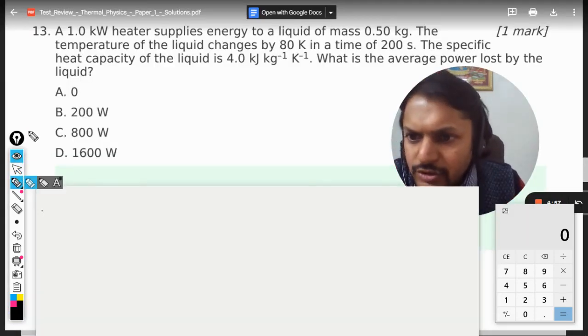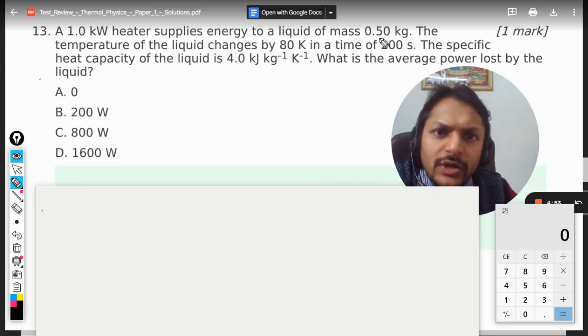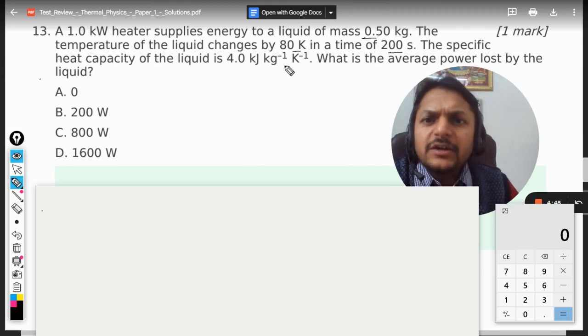Okay, let us see how to do this question. A 1 kilowatt heater supplies energy to a liquid of mass 0.5 kg. The temperature of the liquid changes by 80 kelvin in a time of 200 seconds.